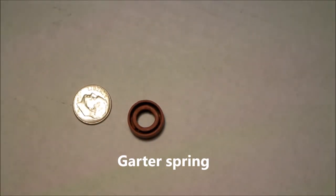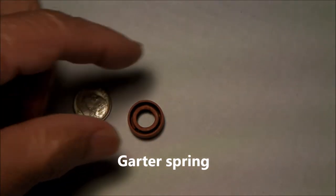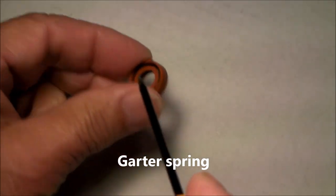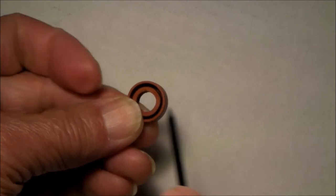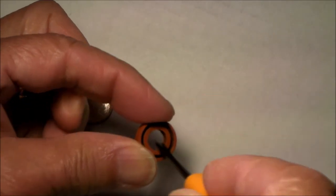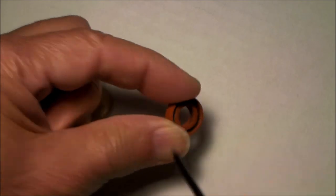There's also a garter spring, G-A-R-T-E-R, right inside there which applies pressure to the seal. So that pressure is being applied to the shaft that's running inside here.